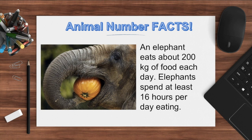To begin with, let's take a look at these interesting animal number facts. An elephant eats about 200 kilograms of food each day, and elephants spend at least 16 hours per day eating. Can you calculate the estimated amount of food they eat in a week? How about in a month? By knowing some patterns, we can easily do this even without using a paper and pen for calculation. Let's first explore the next problem.